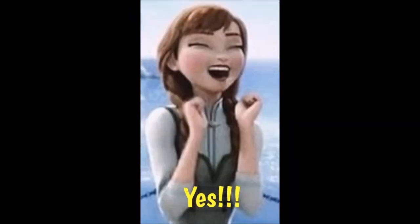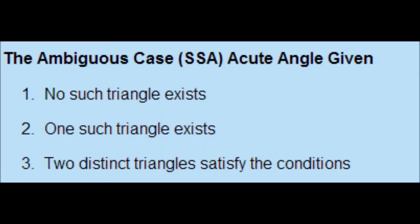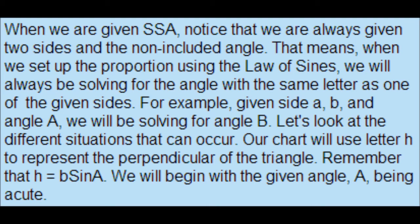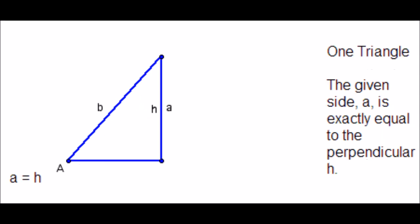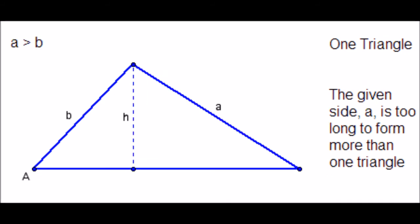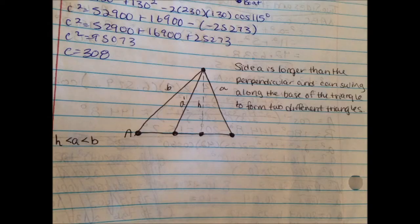We only have one more thing to cover: the ambiguous case, with an acute angle given. No such triangle exists, one such triangle exists, or two distinct triangles satisfy the conditions. You're given two sides and a non-included angle, so you solve for the remaining angle. If side A is too short, no triangle forms. If A is exactly perpendicular to H, one triangle forms. If A is longer than the perpendicular, it can swing to form two separate triangles.